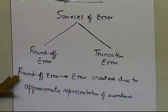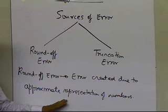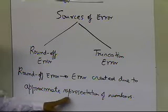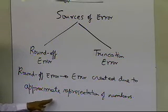The round-off error is simply the error created by the approximate representation of numbers, because in a computer you will only be able to represent a number approximately.